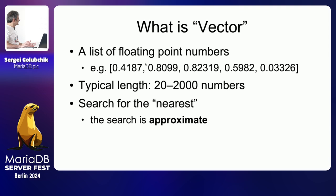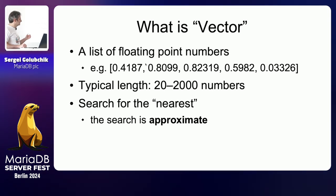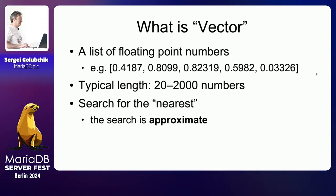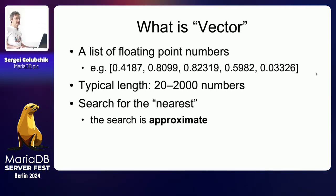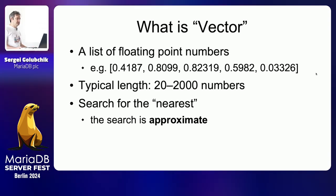A vector is basically just a list of floating point numbers, something like that, although usually a bit longer. Practically, in benchmarks I've seen vectors from 20 to 2,000 numbers. If you use the OpenAI API to convert text into vectors, it generally produces 1,500 numbers, and can also do 300 or 3,000 numbers per vector depending on the model.